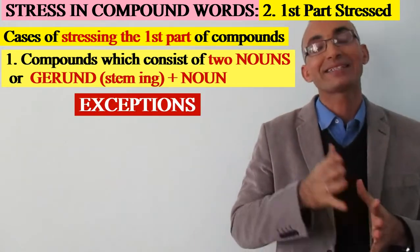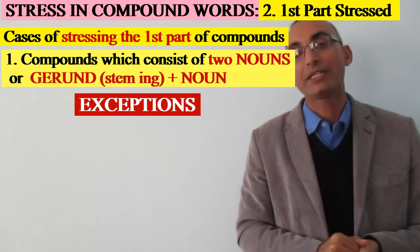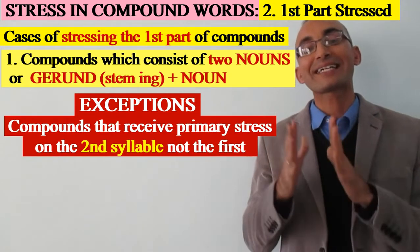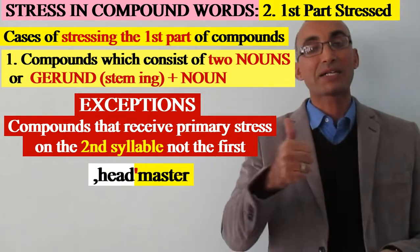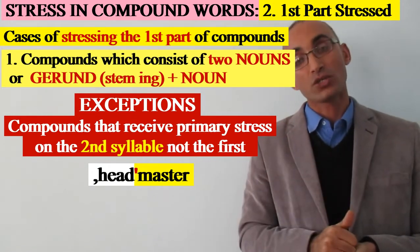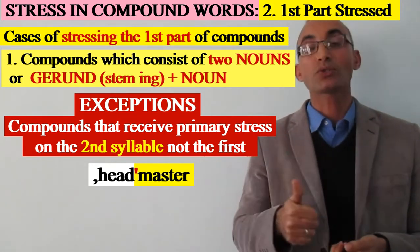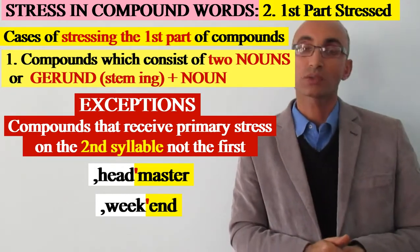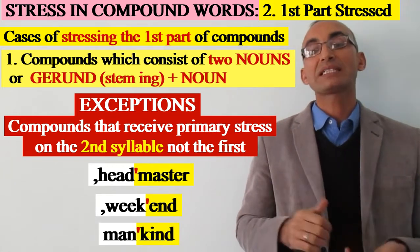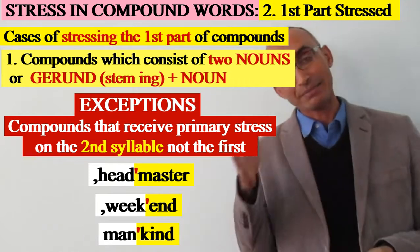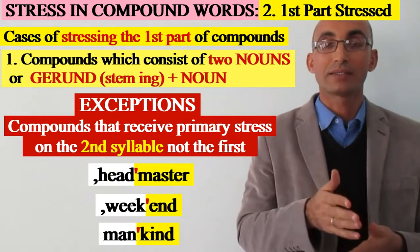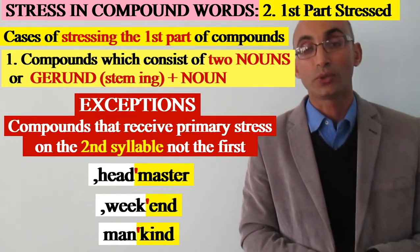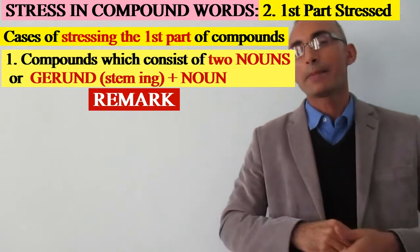Most rules have exceptions, and this rule has three main exceptions where compound nouns receive stress on their second part. First: 'headmaster' — stress 'master', not 'head'. Second: 'weekend' — stress 'end', not 'week'. Third: 'mankind' — stress 'kind', not 'man'. These three represent the exceptions for this rule.